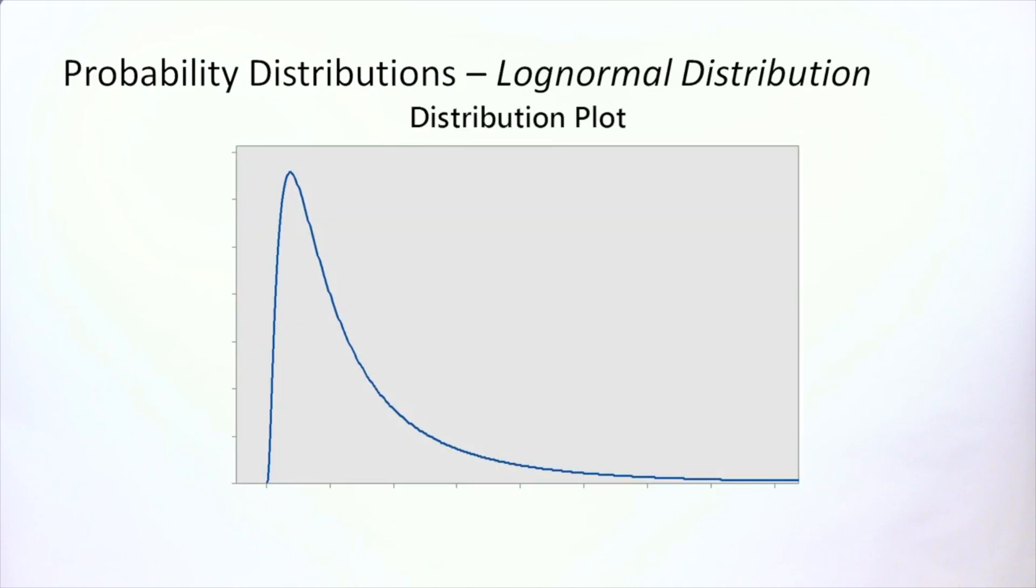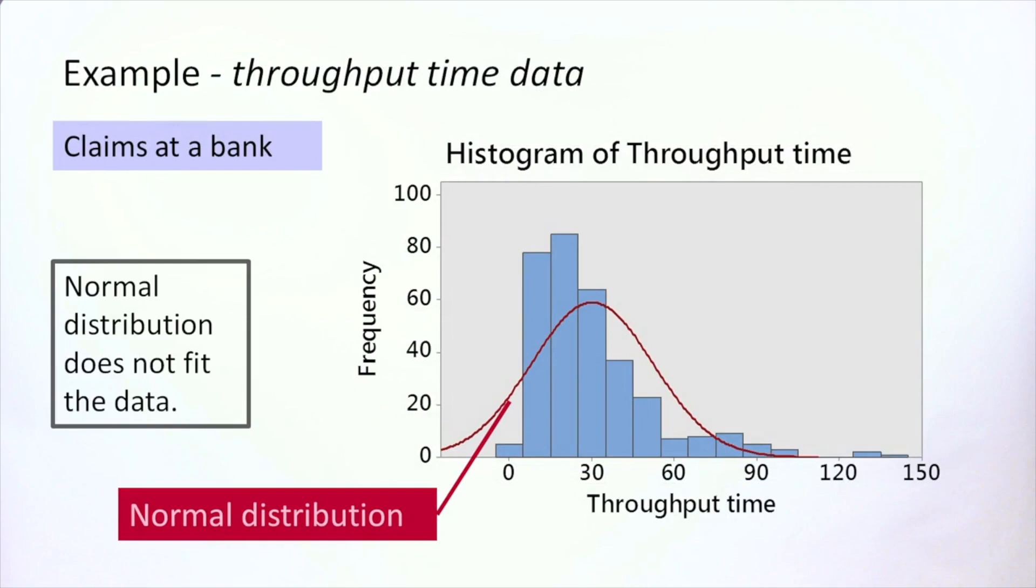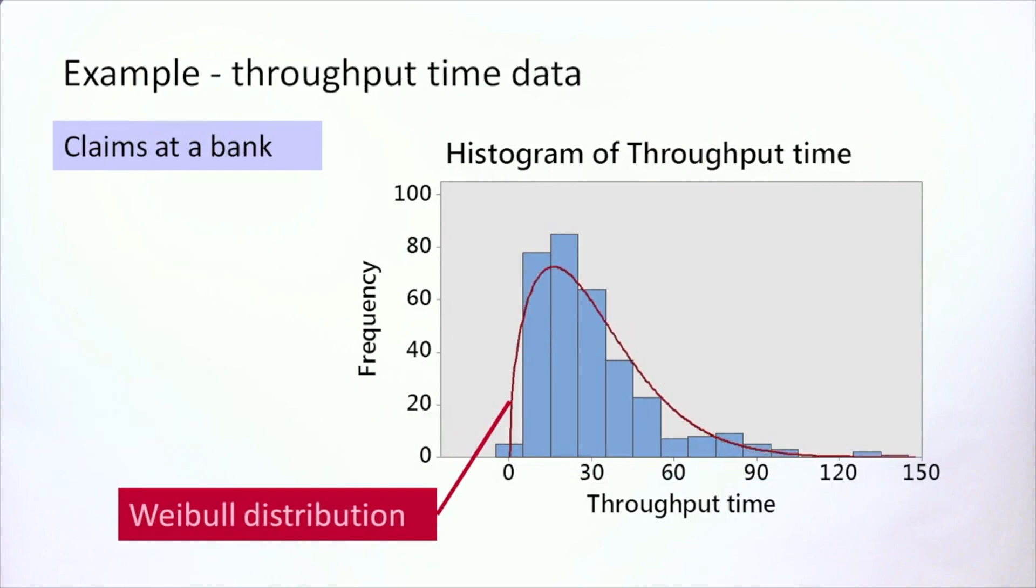Let's go back to our example of throughput times. We saw that the normal distribution did not fit well. Let's have a look at the Weibull distribution. It fits better as the line follows the histogram more closely.